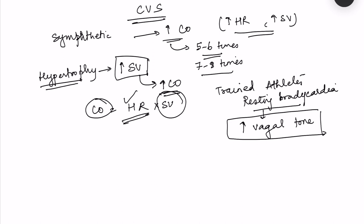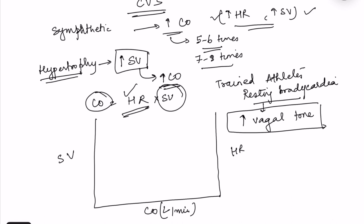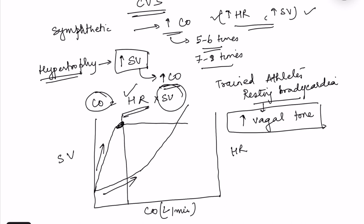Considering which factor — heart rate or stroke volume — contributes more to cardiac output during exercise: on a graph of cardiac output versus stroke volume and heart rate, when exercise begins, stroke volume is the one that increases first and most rapidly, reaching its maximum value much faster compared to heart rate. Both increase from the start, but the rise in stroke volume is much steeper initially.